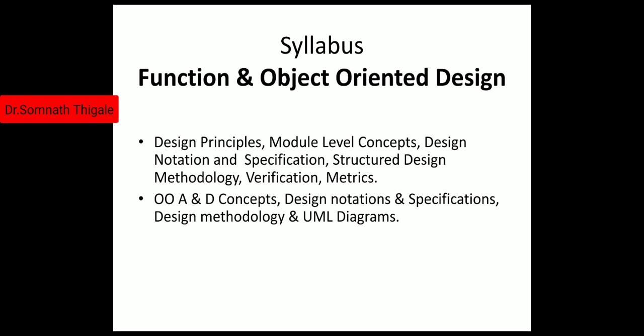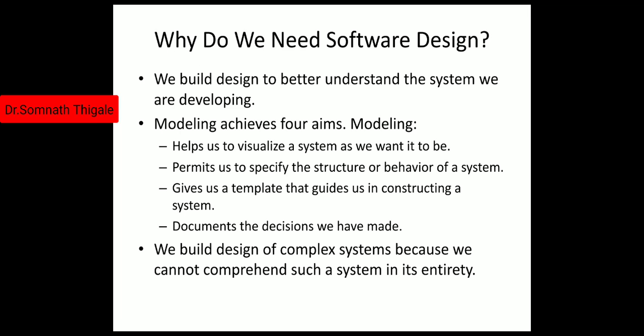Now let us understand why we need software design. We build the design to better understand the system we are going to develop. As part of the SRS, requirements and specifications are with us, but to make them more clear we need a design. This design is nothing but creating models, and modeling achieves four aims: it helps us visualize the system as we want it to be; it allows us to specify the structure or behavior of the system; it gives us a template that guides us in constructing the system; and it documents the decisions we have made.